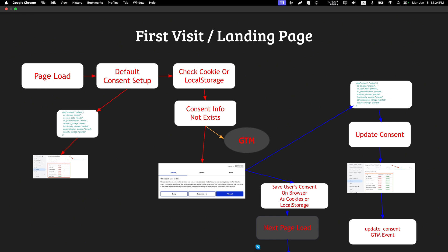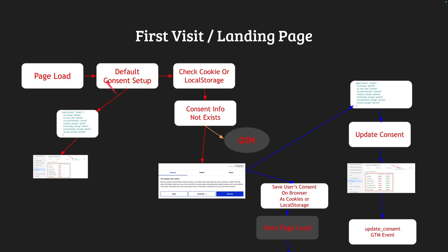To give a quick recap of the previous video: I showed how the cookie consent management platform CMP — in our case Cookiebot — is internally working. When a website loads for the first time, it sets up the default consent and sends the cookie consent banner. When the user provides consent, it updates the consent in Google Tag Manager. It also saves the user-provided consent information in the user's browser so it can be used next time the visitor goes to a second page or revisits the website, so it can remember what consent the user gave previously.